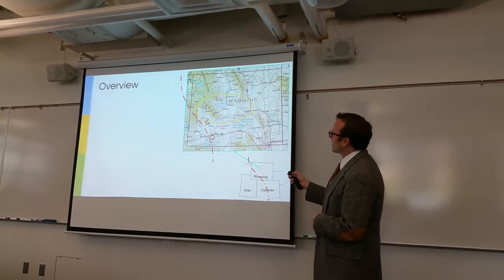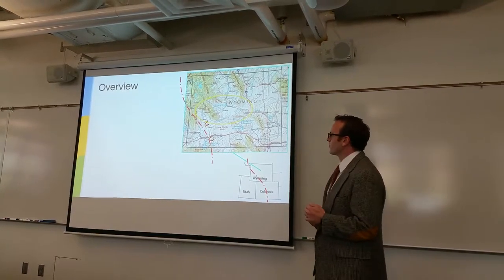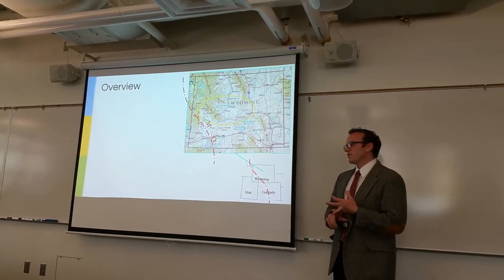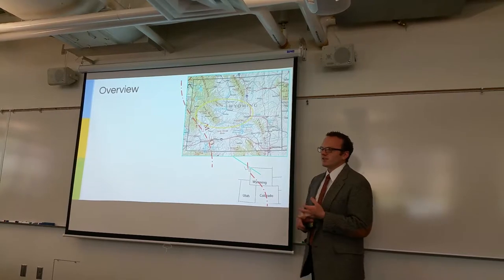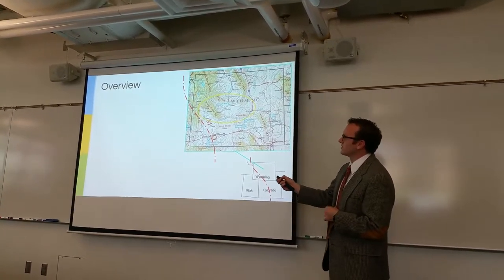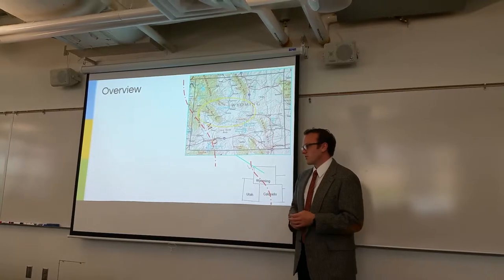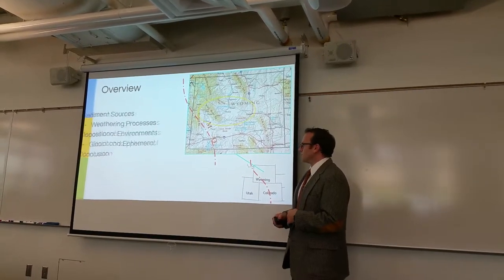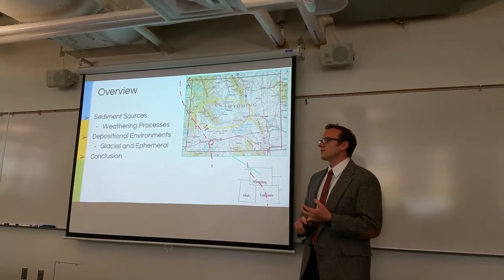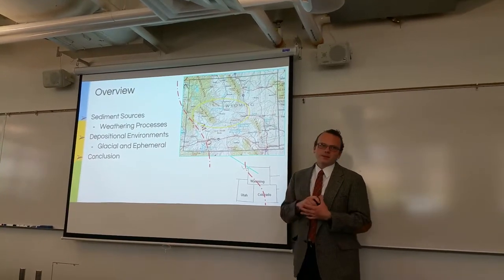As a brief overview, this is Wyoming. The Wind River Basin is surrounded by Laramide Age uplifts. You have the Wind River Range on the left, the Owl Creek Range on the north, the Casper Arch and Casper Range on the east, and the Granite Range on the south. The Continental Divide runs through here, dividing the watershed of Western North America and Eastern North America. I want to go into different sediment sources, weathering processes, and depositional environments, both in fluvial and glacial type settings.